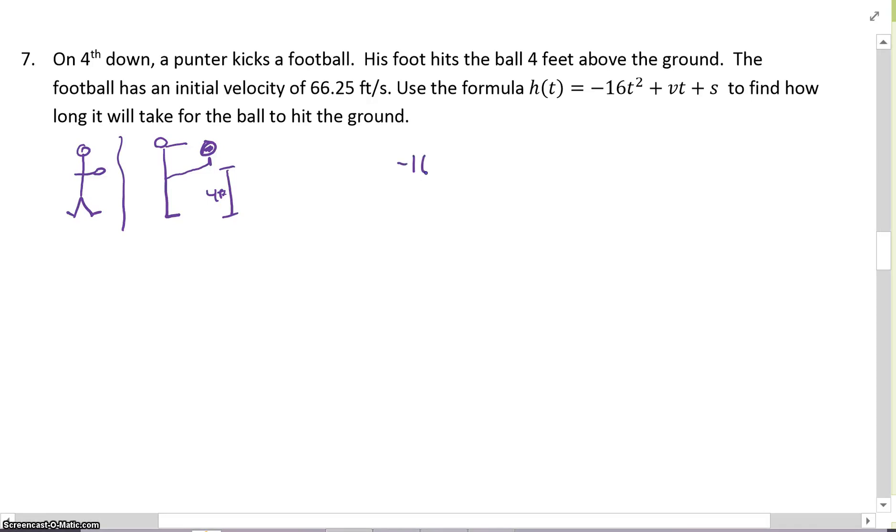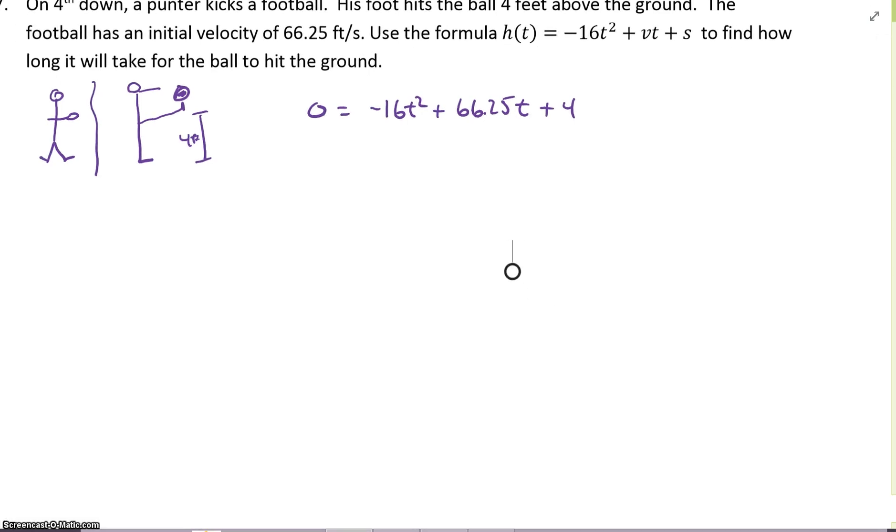Our formula is -16t². Our velocity was 66.25. And my s, my distance was 4. All we would have to do is set that equal to 0. This is a great time right here to solve. What we could do is just plug it in the quadratic formula. -b ± √(b² - 4ac) all over 2a. So let's do -b. That would be -66.25 ±...